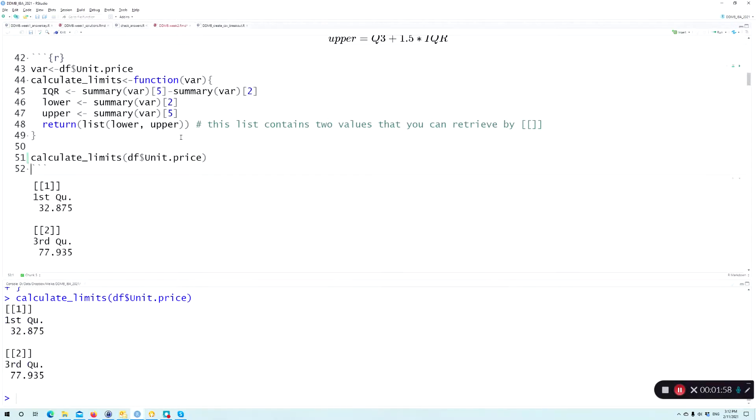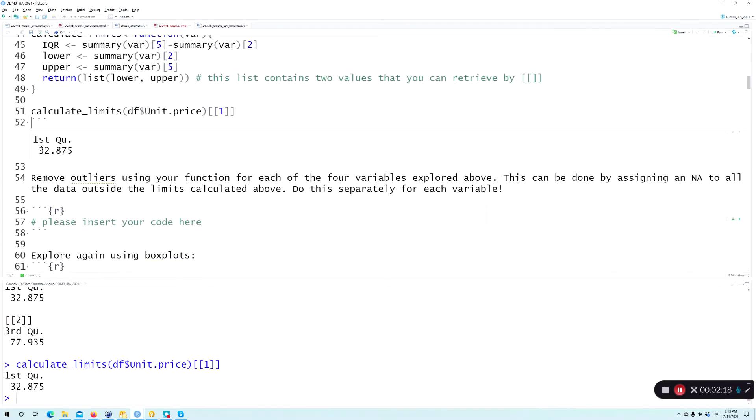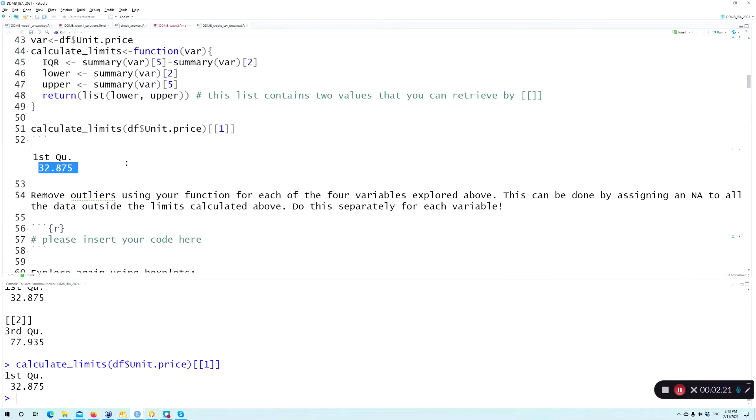And you can see that by these two brackets here. It's not one bracket but two brackets—that's the way how lists work. So if we want to get the first part, the first part of this list, we just take two brackets here and then we get the first number that is given.